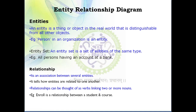An ER diagram represents a diagrammatic representation of your database. Generally, an ER diagram consists of three things: entity, relationship, and attributes. We will understand each one by one, but first you should be clear that an ER diagram is nothing but a diagrammatic representation of your database.